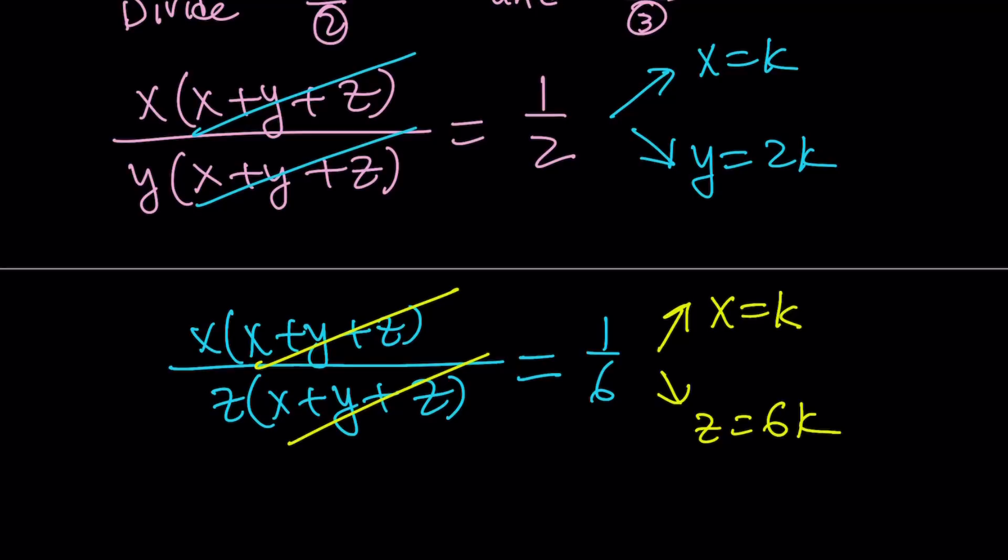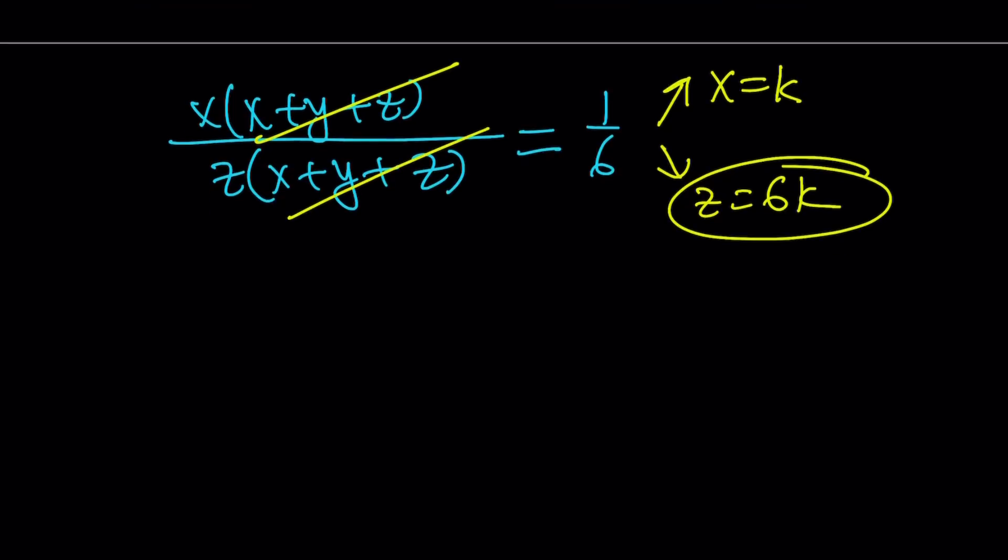So here's the thing. Here's the critical part. Sometimes with ratio and proportion problems, you don't get the same thing for x, but here we did. So you always have to check for that. If you don't get the same thing, then you can adjust your variables, ratios, so on and so forth. So we get x equals k, y equals 2k, and z equals 6k. What can I do with this? Well, I have three equations. Let's use the first one.